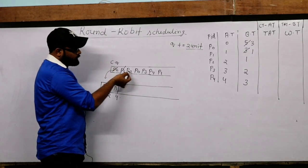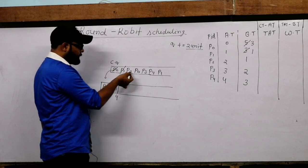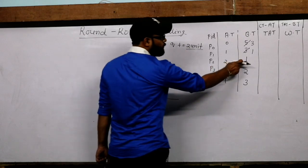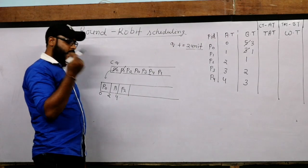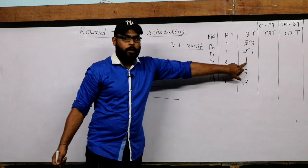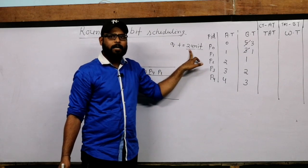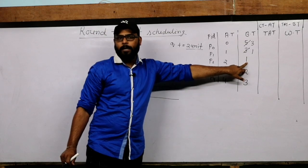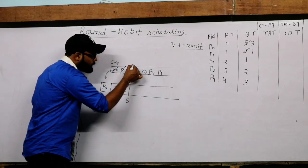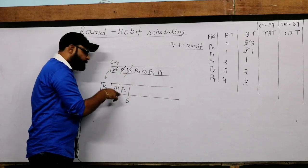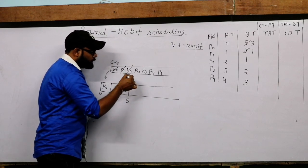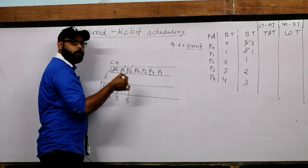Process P2 goes into the Gantt chart. P2 has only 1 unit burst time, so there is no need to run for 2 units. P2 executes only 1 unit — from 4 to 5 in the Gantt chart. Since P2's burst time equals 1 (less than quantum 2), P2 finally finishes its execution and is removed from the circular queue.